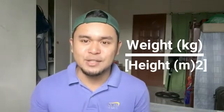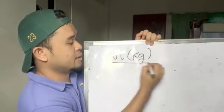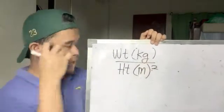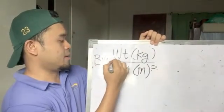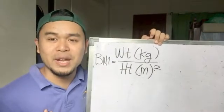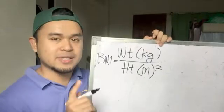So let's compute. I have my calculator here — actually this is one of the best calculators I have because it helped me pass the board exam. Again, the formula is weight in kilograms over height in meters squared. Let's use my own measurements, so you will know if I am overweight, underweight, normal, or obese.